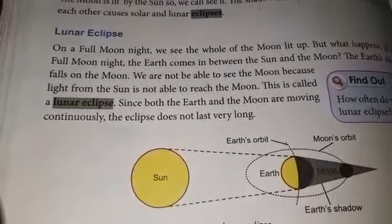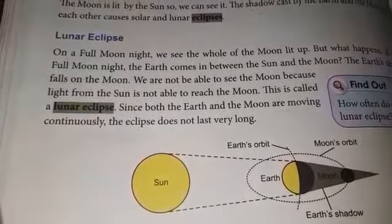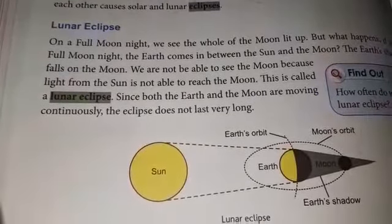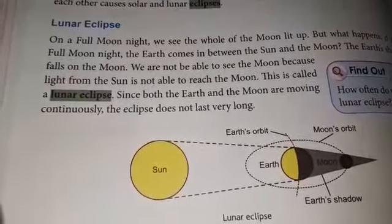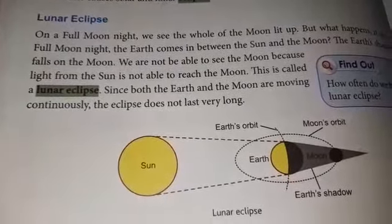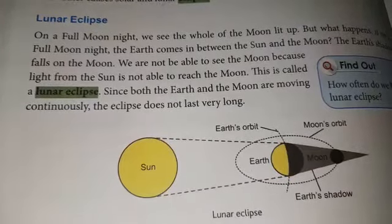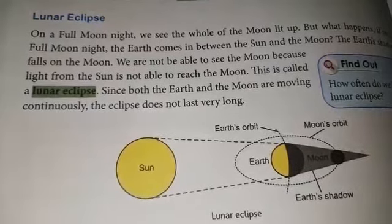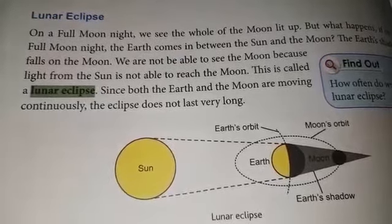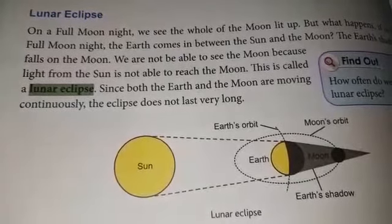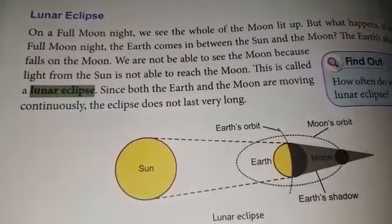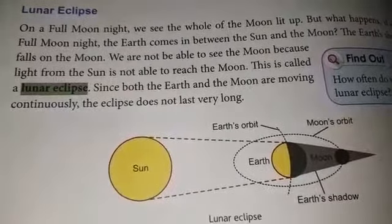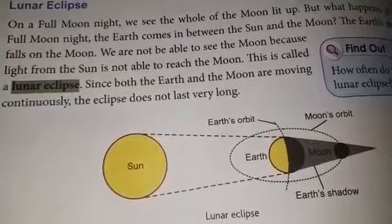Since both the earth and the moon are moving continuously, the eclipse does not last very long. When the moon moves out of the earth's shadow, we will be able to see the moon again.